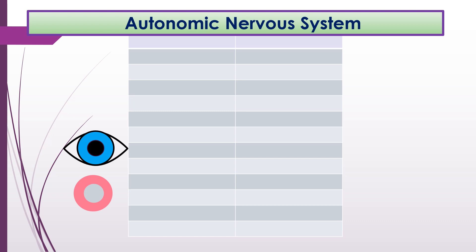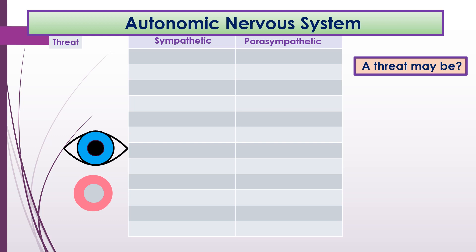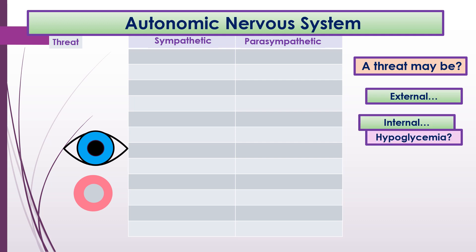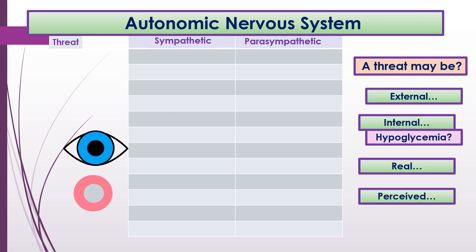The autonomic nervous system can be broken down into two parts: the sympathetic and the parasympathetic systems. The sympathetic system is a response to a threat. A threat could be external, an internal threat like hypoglycemia, a real threat, or a perceived threat. Fear could be a real threat, or if you're perceiving something as a threat, even if it's not, it's still going to elicit the sympathetic response.